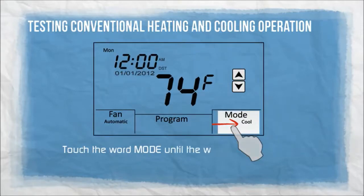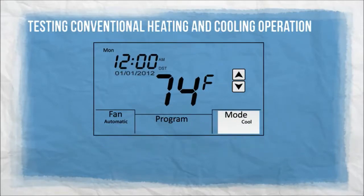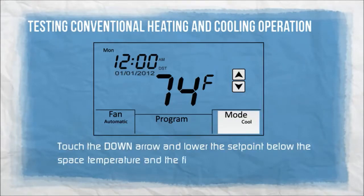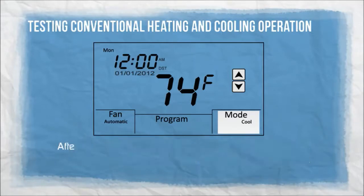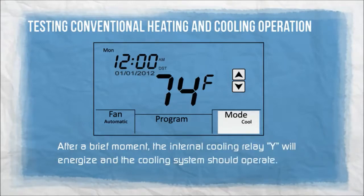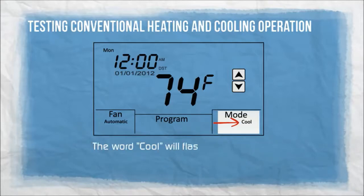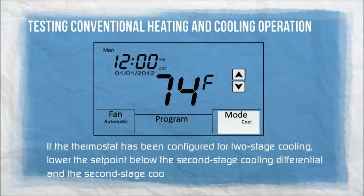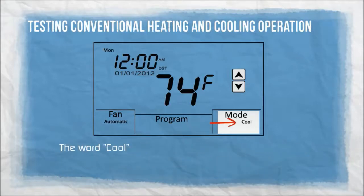Touch the word MODE until the word COOL appears. Touch the down arrow and lower the set point below the space temperature and the first stage cooling differential. After a brief moment, the internal cooling relay Y will energize and the cooling system should operate — the word COOL will flash continuously. If configured for two-stage cooling, lower the set point below the second stage cooling differential and the second stage cooling relay Y2 will energize. The word COOL will flash twice, pause, and repeat to indicate second stage has been energized.